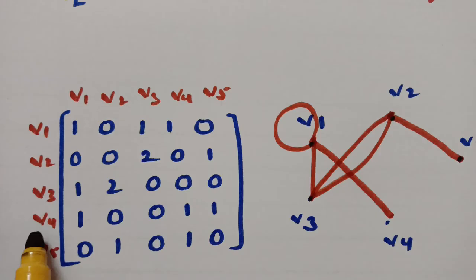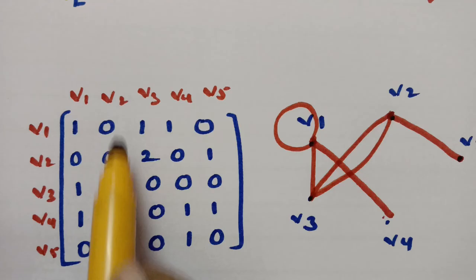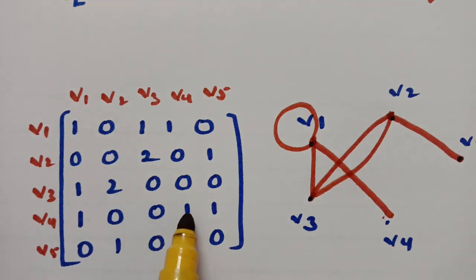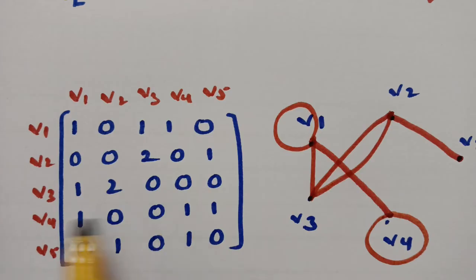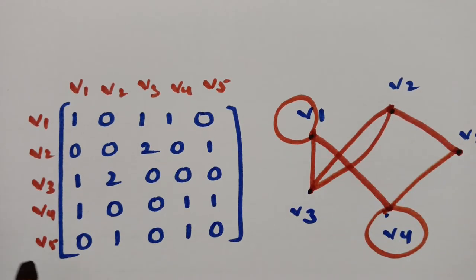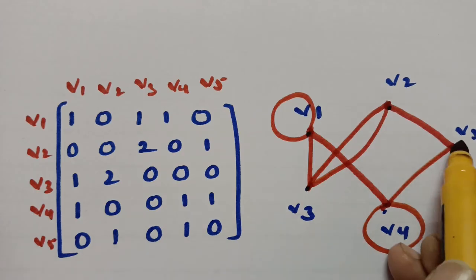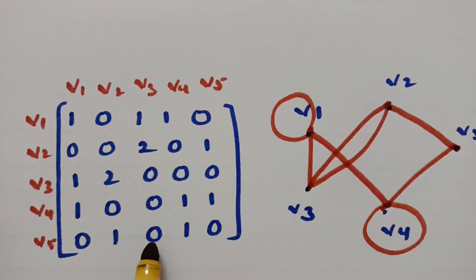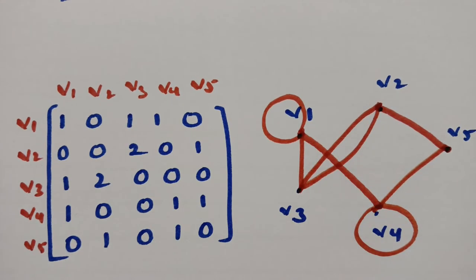Coming to v4 — v4 has 1 edge with v1, done. V4 has 0 relation with v2 and v3. With v4 to v4, it has 1, so it is a loop. Next, v4 to v5: completed. Coming to v5 — v5 has no edge with v1. It has an edge with v2. It has no edge with v3. And with v4, it has an edge.